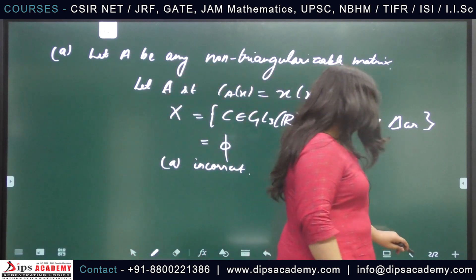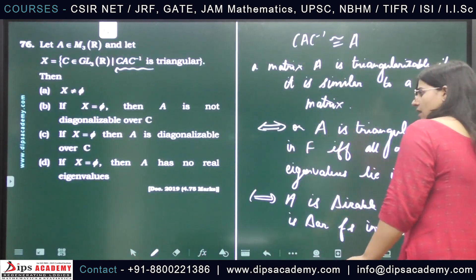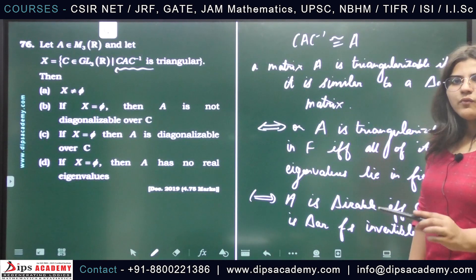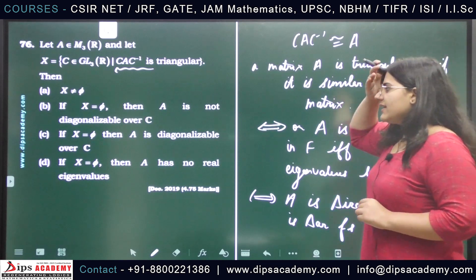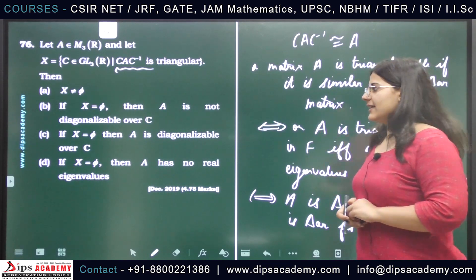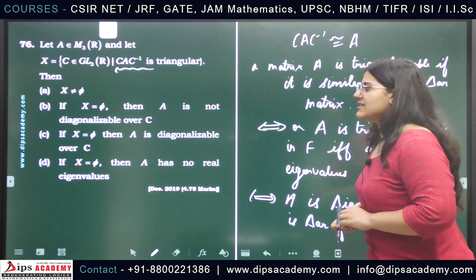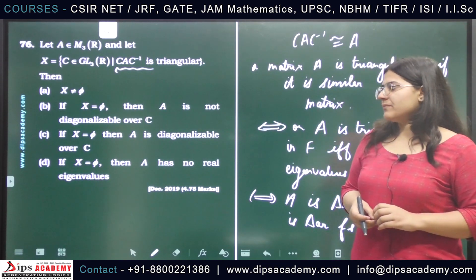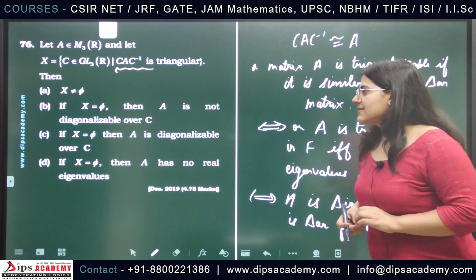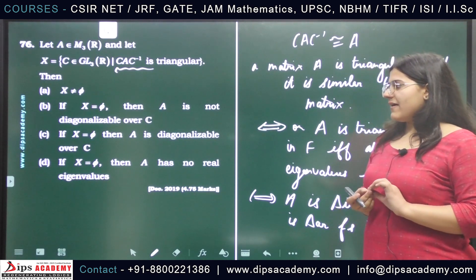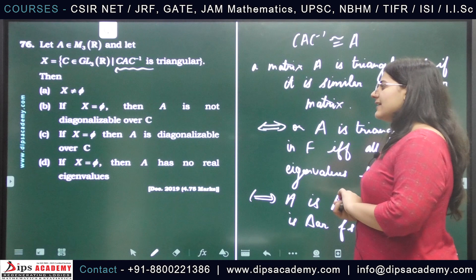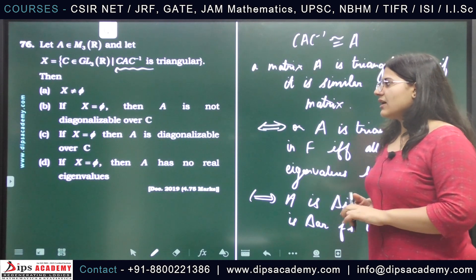Now let us move to options B and C. Out of B and C only one can be true. Option B states that if X is the empty set then A is diagonalizable over ℂ. Option C states that if X is the empty set then A is not diagonalizable over ℂ.